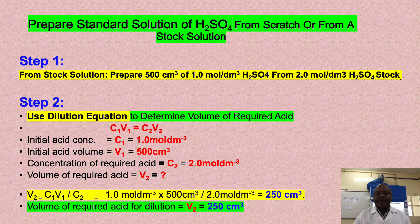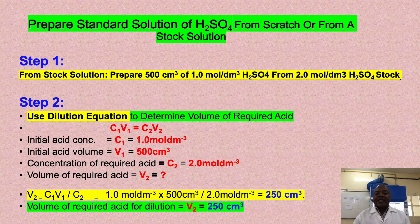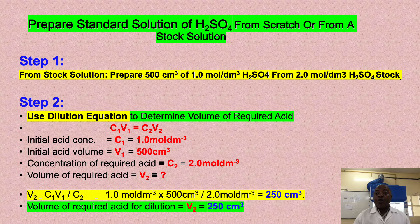We substitute our values into the equation C₁V₁ = C₂V₂. The volume of the required acid, V₁, will be C₂ × V₂ ÷ C₁, which equals 1.0 mol/dm³ × 500 cm³ ÷ 2.0 mol/dm³. Our answer is 250 cm³ — the volume of stock acid required for dilution.